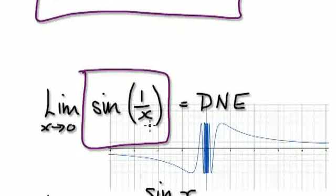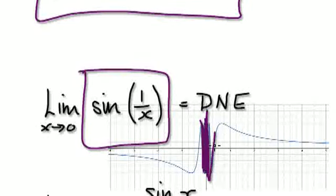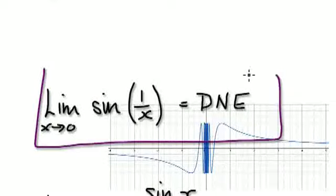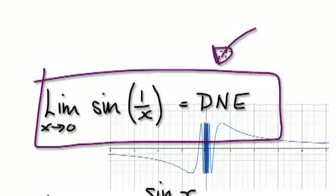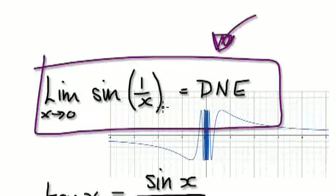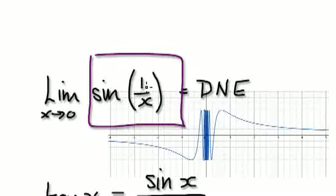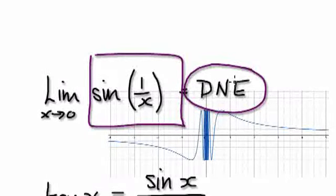The limit of sin(1/x) as x approaches 0 does not exist, because it just oscillates so much faster as you approach 0. If you don't understand this, scroll back to some of the earlier videos. Remember: the limit of sin(1/x) does not exist.